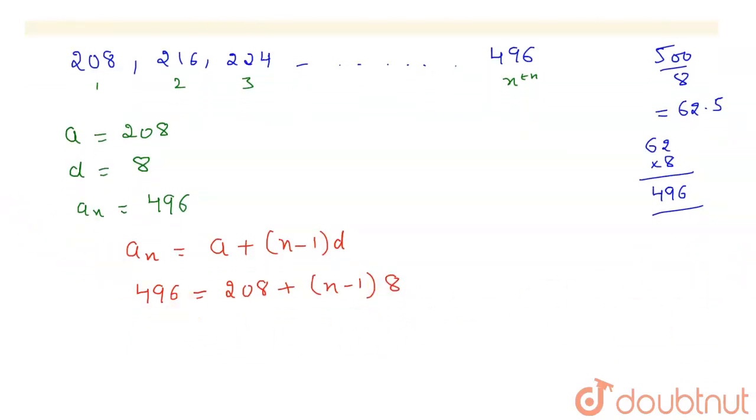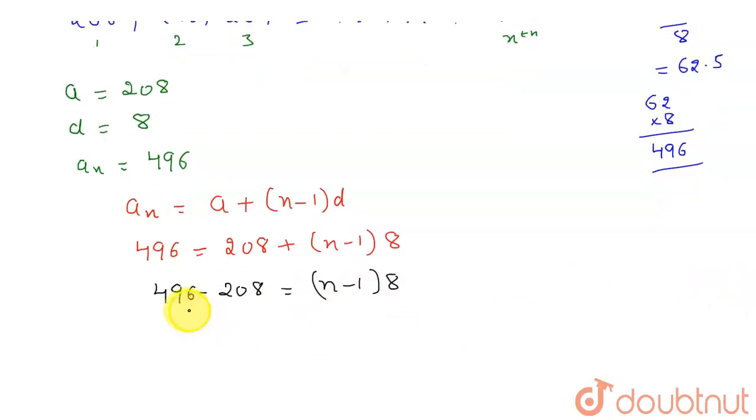From this I can quickly find my n value. So this will be giving me 496 minus 208 to be equal to (n minus 1) into 8. So, 496 minus 208 is 288, which will be equal to (n minus 1) into 8.